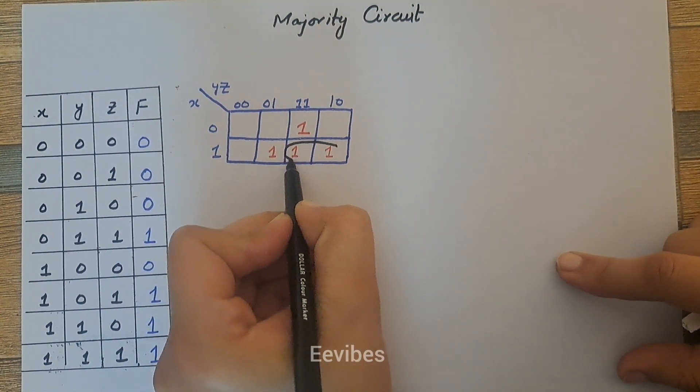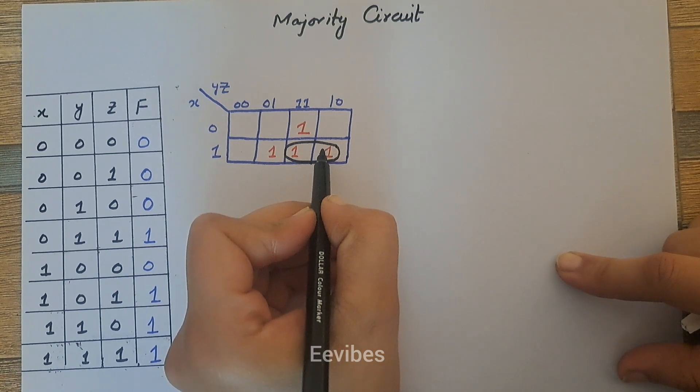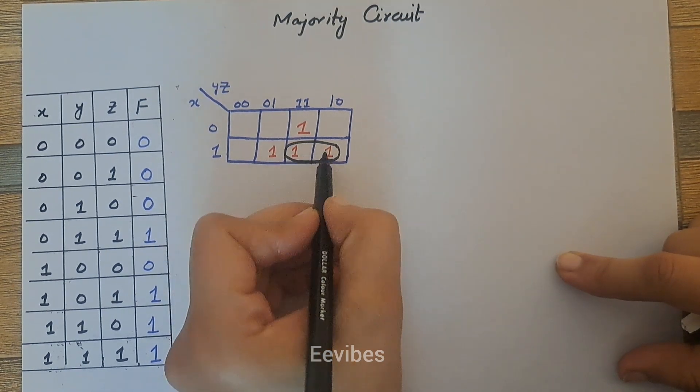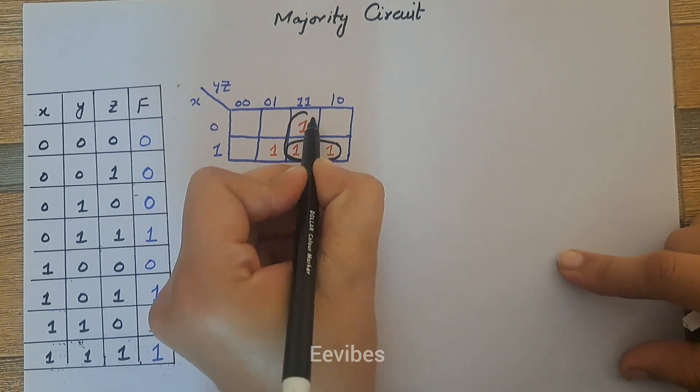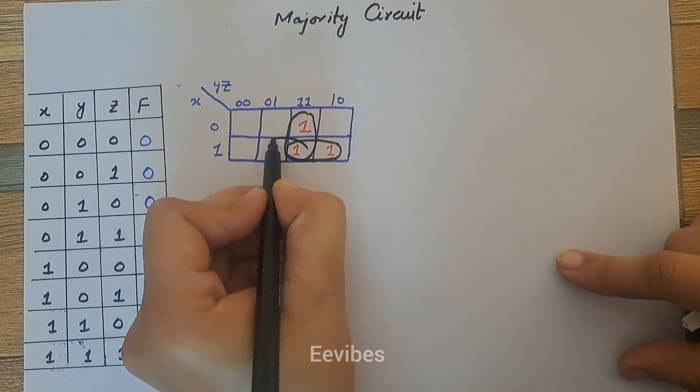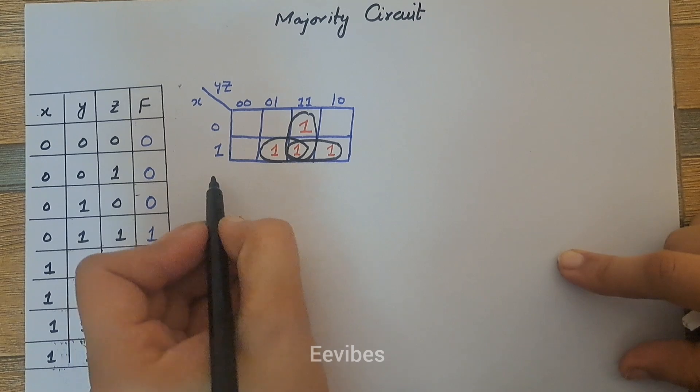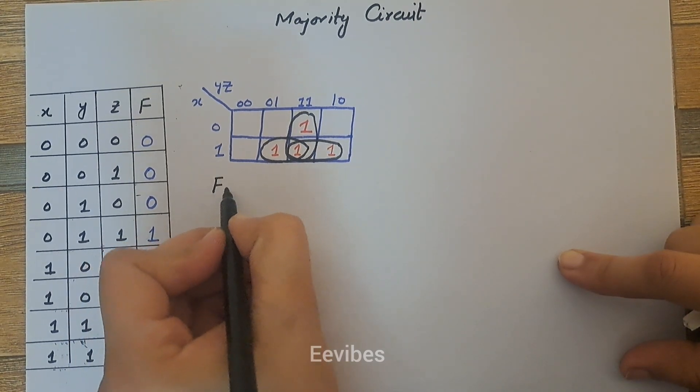The next step is to combine the adjacent boxes or the adjacent minterms. So we can combine these two minterms, then you can combine these two minterms, and finally you will combine these two adjacent boxes.